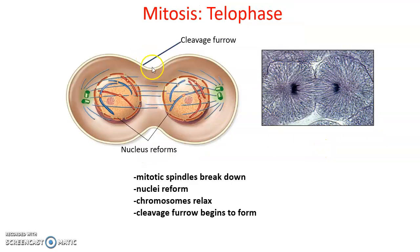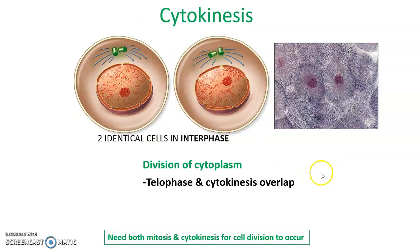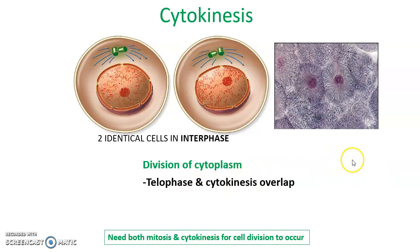In telophase, cytokinesis occurs: the cell begins to split into two new cells, the nucleus reforms, the chromosomes relax back to their relaxed state, and the cell returns to interphase. Cytokinesis is the actual division of the cytoplasm into two separate cells. Cytokinesis and mitosis occur together at the same time — they are not distinct time-wise.